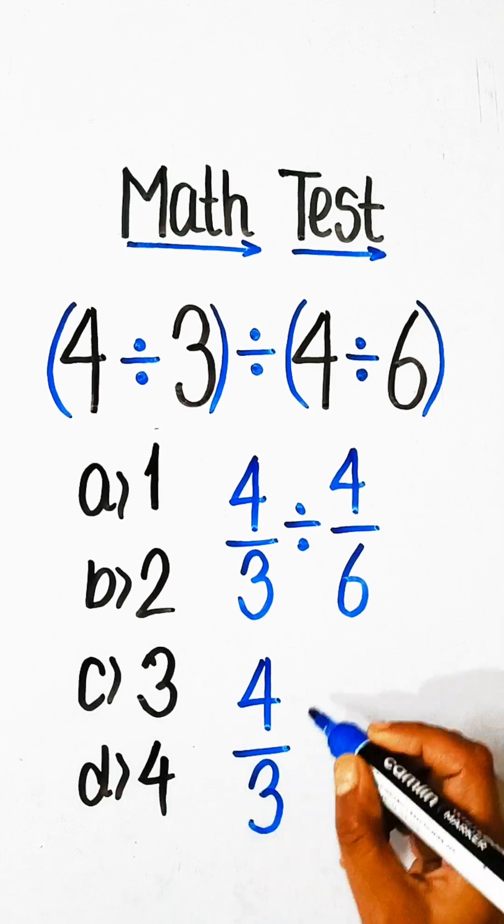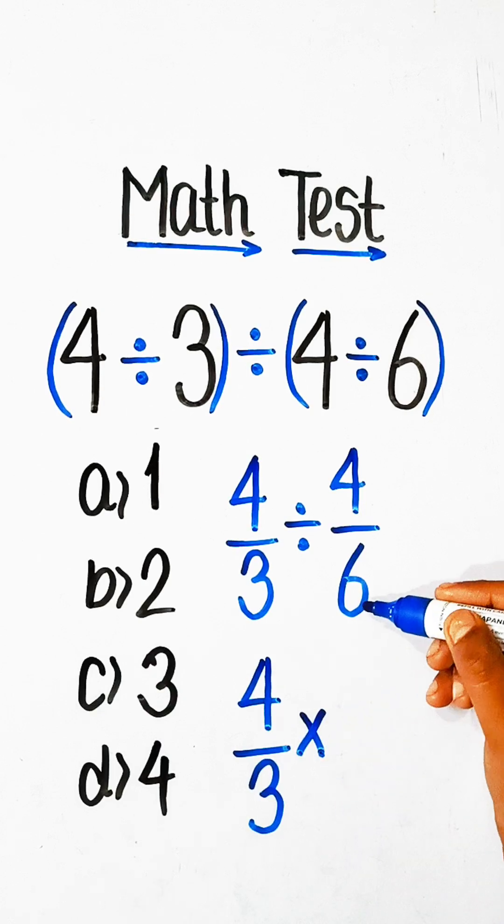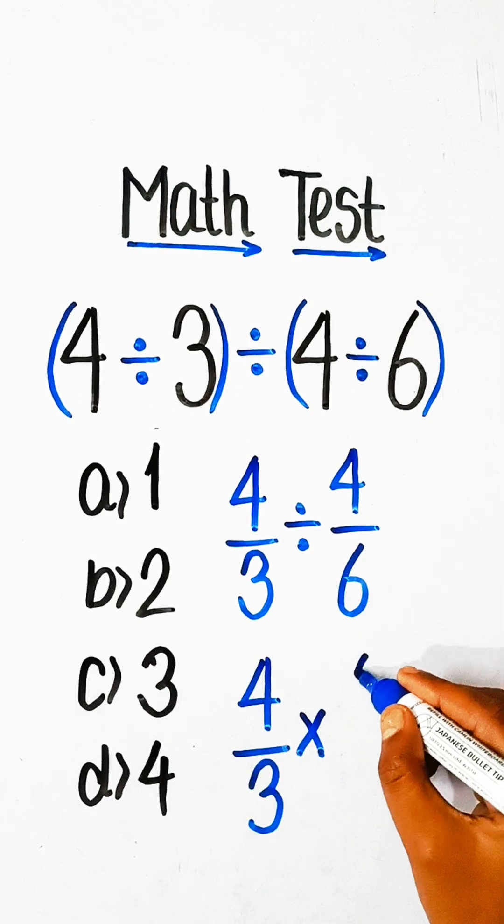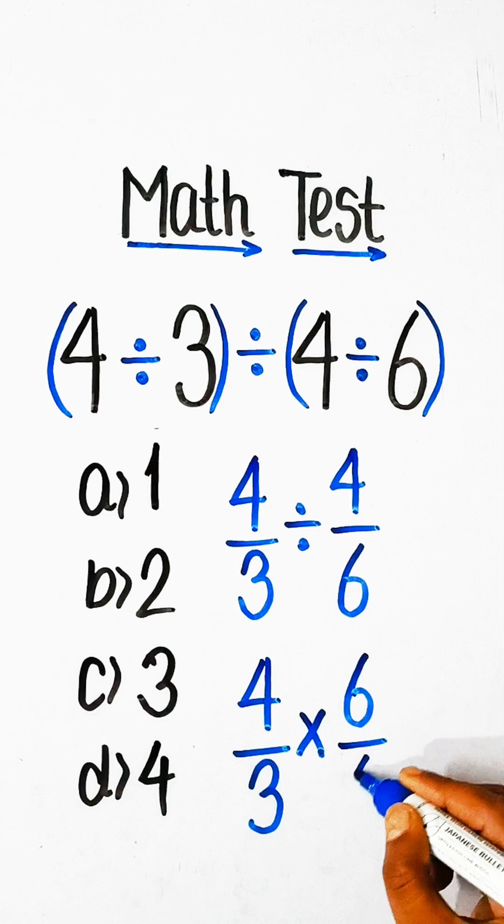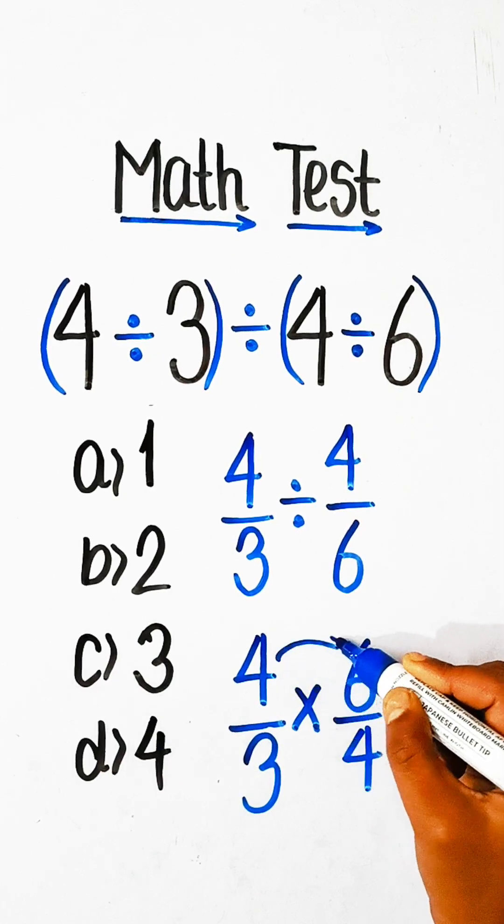We have to change the sign so that 6 will come up and 4 down. So let's multiply these fractions.